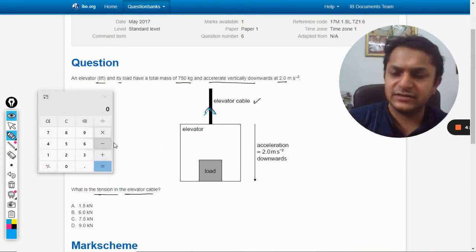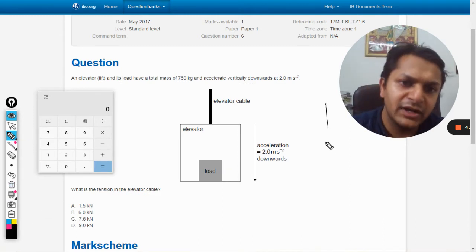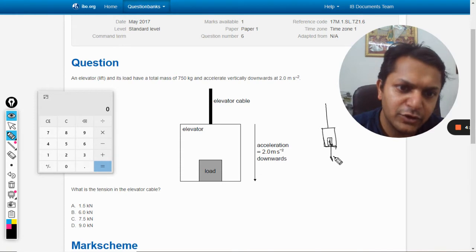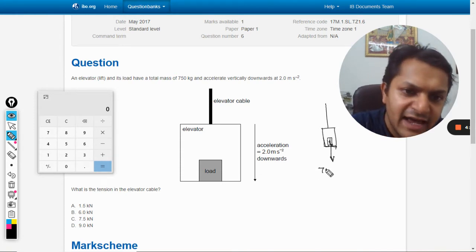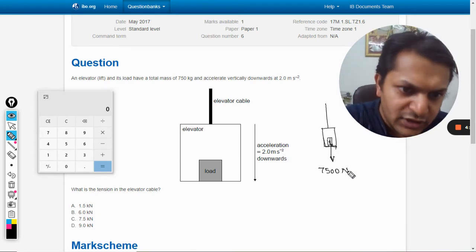Yeah, like this. Okay, I will make my own diagram now. Let's say this is the elevator and there is a mass here, and the total weight is 750 kg, which means 7500 newtons.